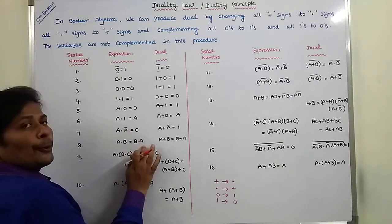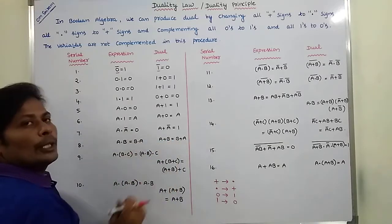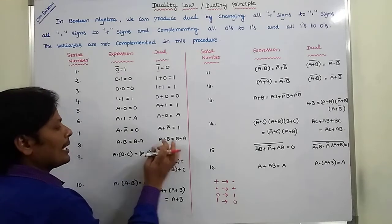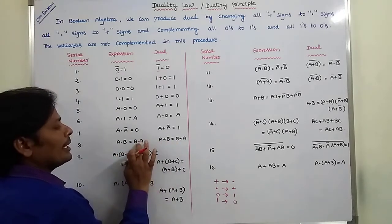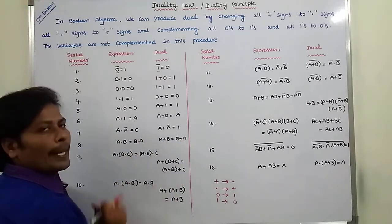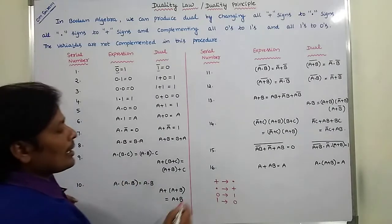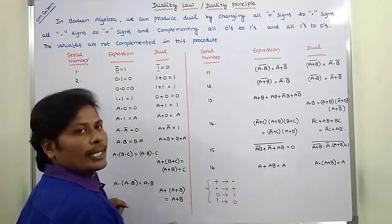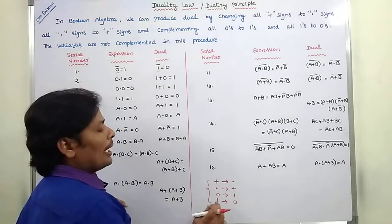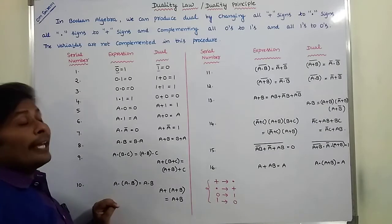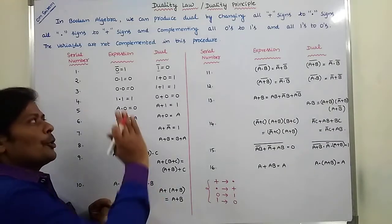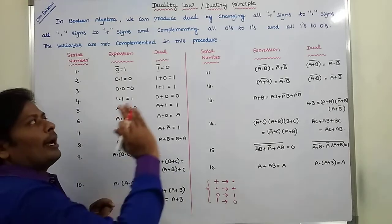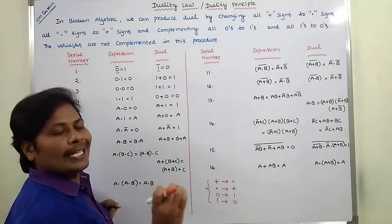A AND B equals B AND A; its dual is A plus B equals B plus A. Here A is the same, AND sign changes to plus, B is the same, equals B is the same, plus sign changes to AND, A is the same. So in summary: plus sign changes to AND, AND sign changes to plus, zero changes to one, one changes to zero, and the variables are not complemented. Where A appears, in the dual A also appears; where Ā appears, in the dual Ā also appears.